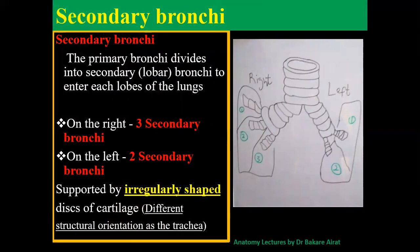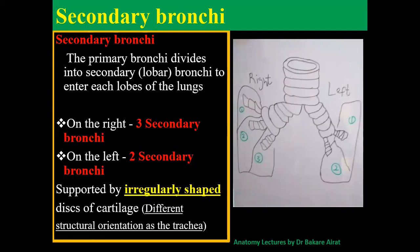The second stage is the secondary bronchial division, also called the lobar division because it supplies the lobes of the lungs. On the right side, because there are three lobes, it divides into three secondary bronchi. On the left side, there are two, corresponding to the two lobes. At the secondary bronchial stage, the cartilage begins to lose its C-shaped configuration and becomes irregularly shaped.